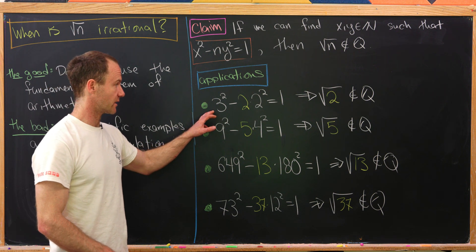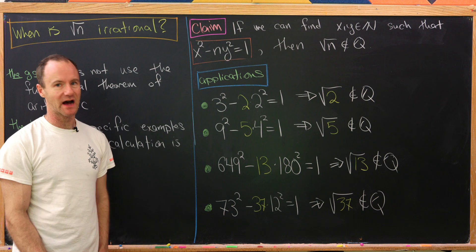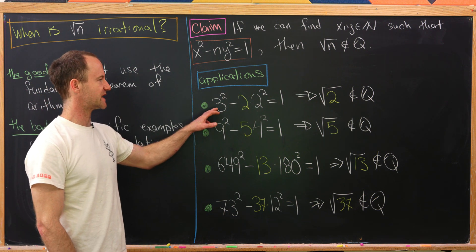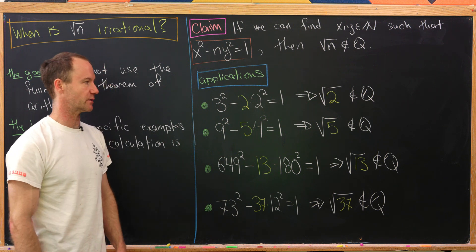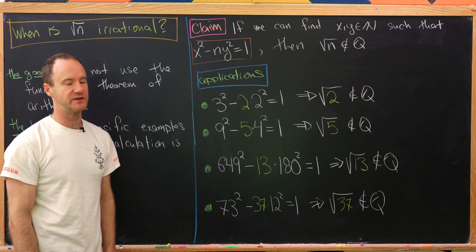We've got 3 squared minus 2 times 2 squared is 1. That's pretty clear. 9 minus 8 is equal to 1. But that means we've got a solution to x squared minus 2 times y squared equals 1. But that means that square root of 2 is irrational by what we just proved.